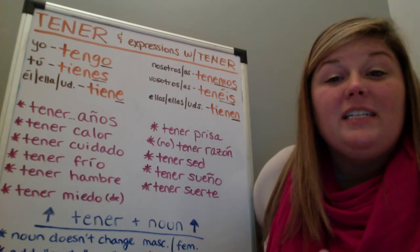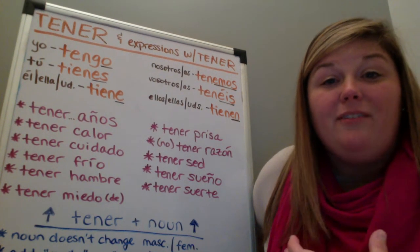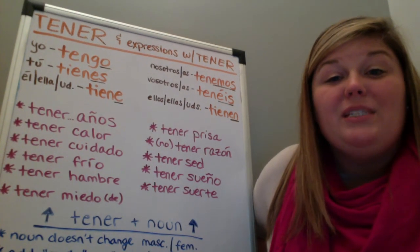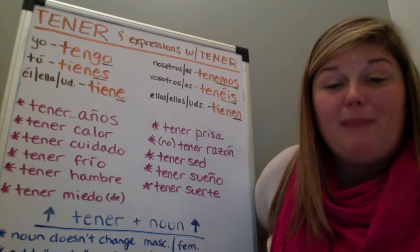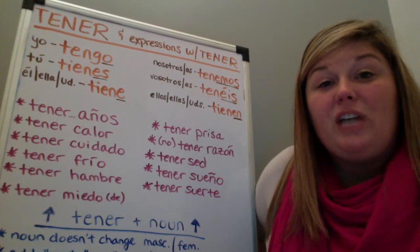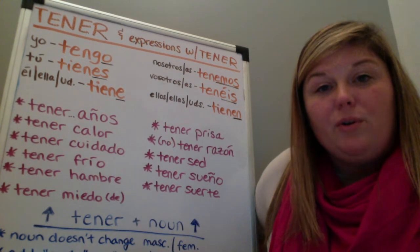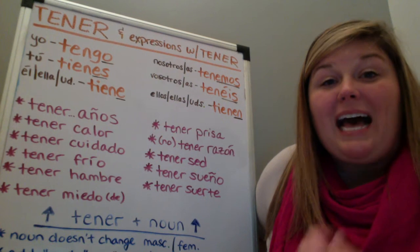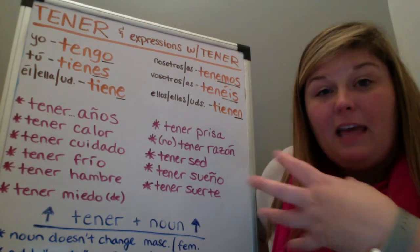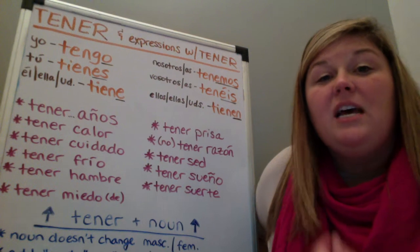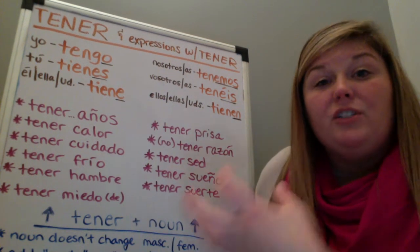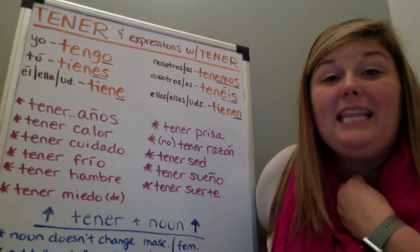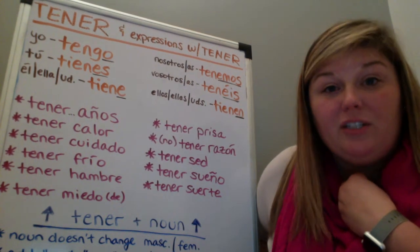All of these expressions are the verb tener followed by a noun. The first expression is tener años — this is how we talk about age in Spanish. In English I would say 'I am 30 years old,' but in Spanish we say 'I have however many years,' as in 'I have years on this earth.' So I would say: yo tengo 30 años — I have 30 years.